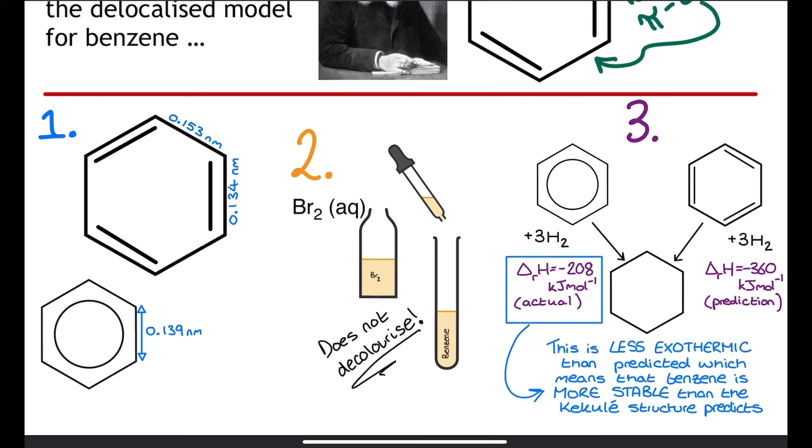Instead it's actually a less exothermic negative 208 kilojoules per mole, which is a 152 kilojoule per mole discrepancy. Our bottom line here is that since this enthalpy of hydrogenation for real benzene is less exothermic than Kekulé's suggestion, the structure for benzene is more stable than Kekulé's model suggested.